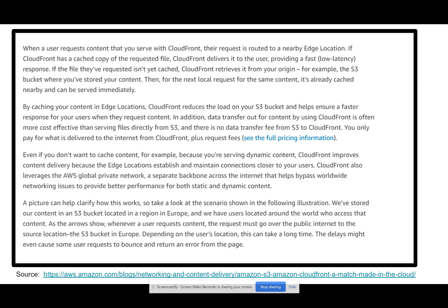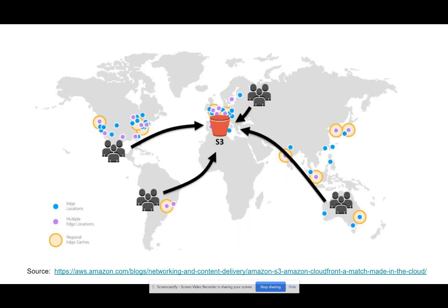This is the map shown earlier. You can see a user requesting a particular file, image, or web page. If the edge location already has that file, the user gets a very fast return speed. If the cache doesn't have that file, it retrieves it from the S3 bucket. Then for 24 hours — which is the default — that file or image stays cached in that edge location.